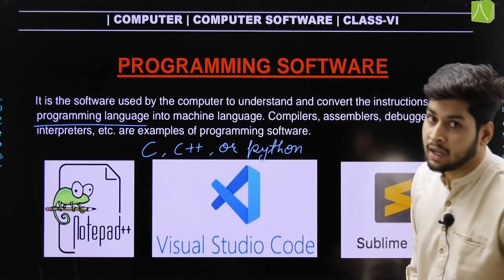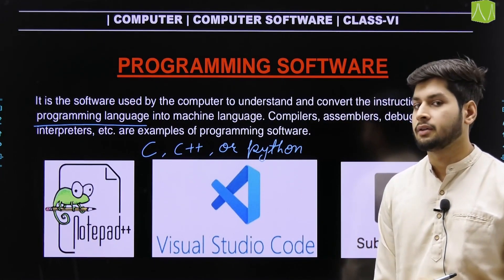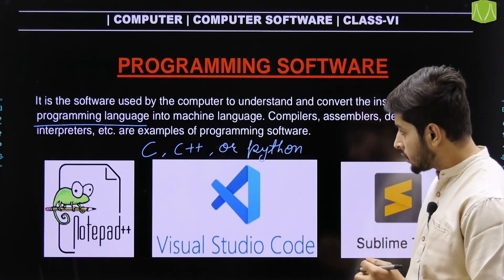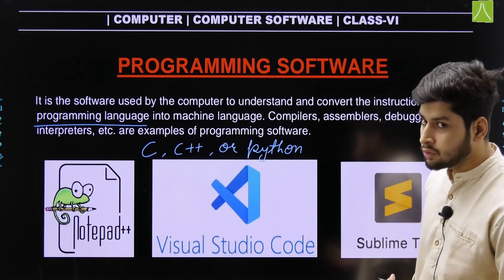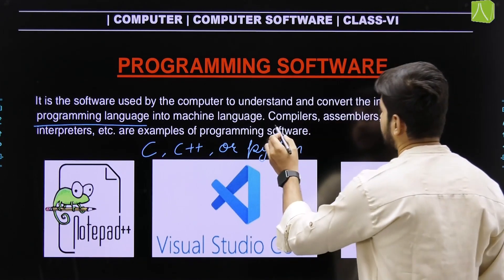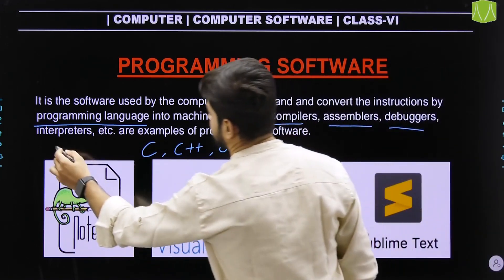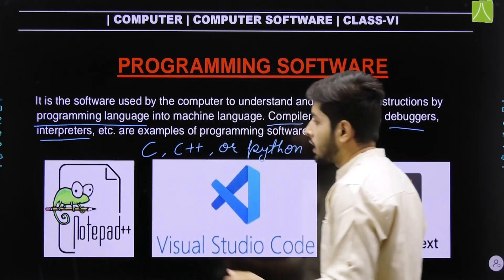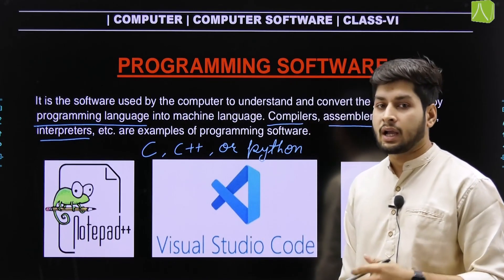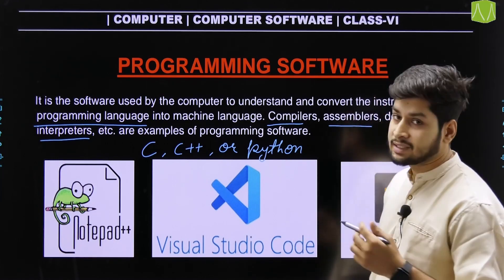Now, through programming language, what do we do? Programming software basically includes compilers, assemblers, debuggers, and interpreters. The question is: what type of language is a programming language — is it a compiled language, an interpreted language, or an assembly language?